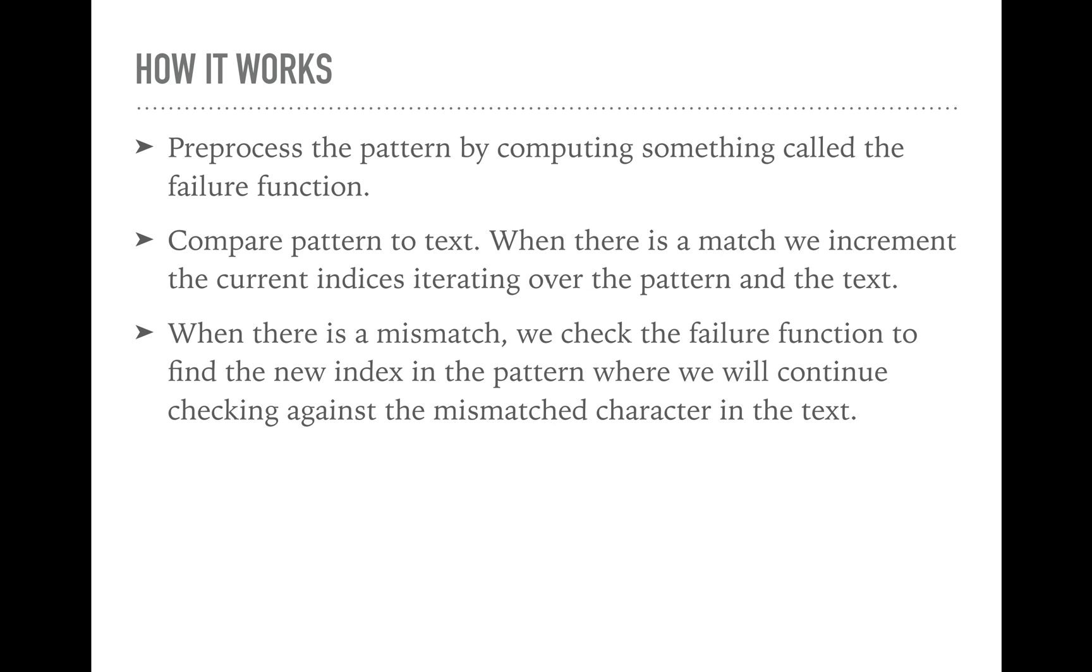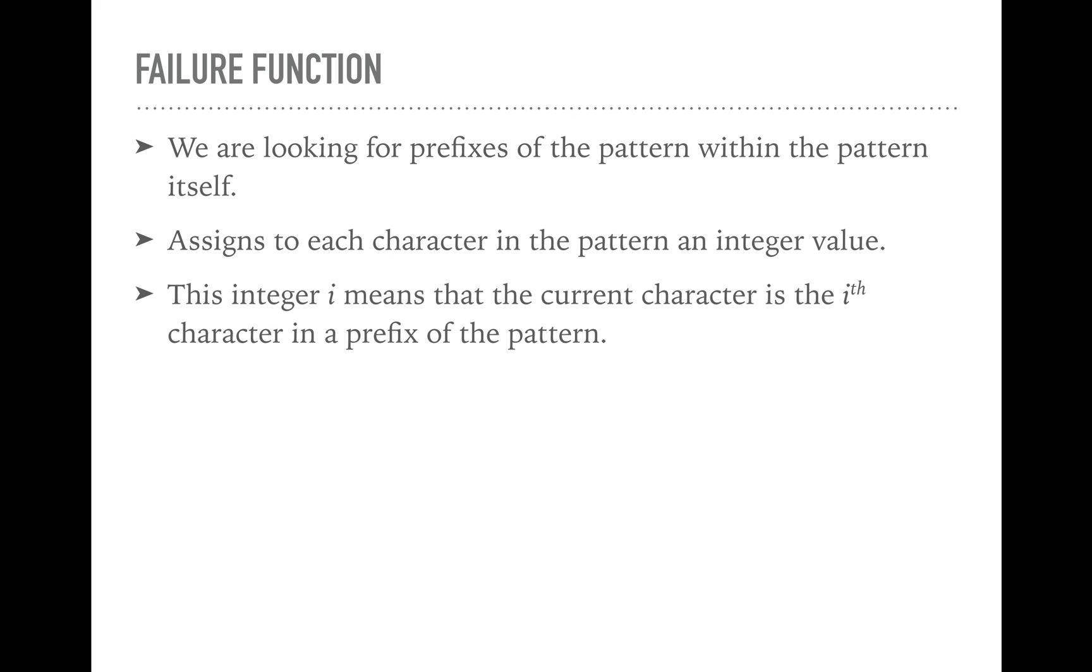The first thing that we're going to do with this Knuth-Morris-Pratt algorithm is we're going to preprocess the pattern. And we're going to do that by computing something called the failure function. We're going to see what that is in a minute. So next we're going to compare the pattern to the text. When we find a match, we're just going to increment the current indices iterating over both the pattern and the text. When there's a mismatch, that's when we're going to look at the failure function to find the new index in the pattern where we'll continue checking against the mismatched character in the text.